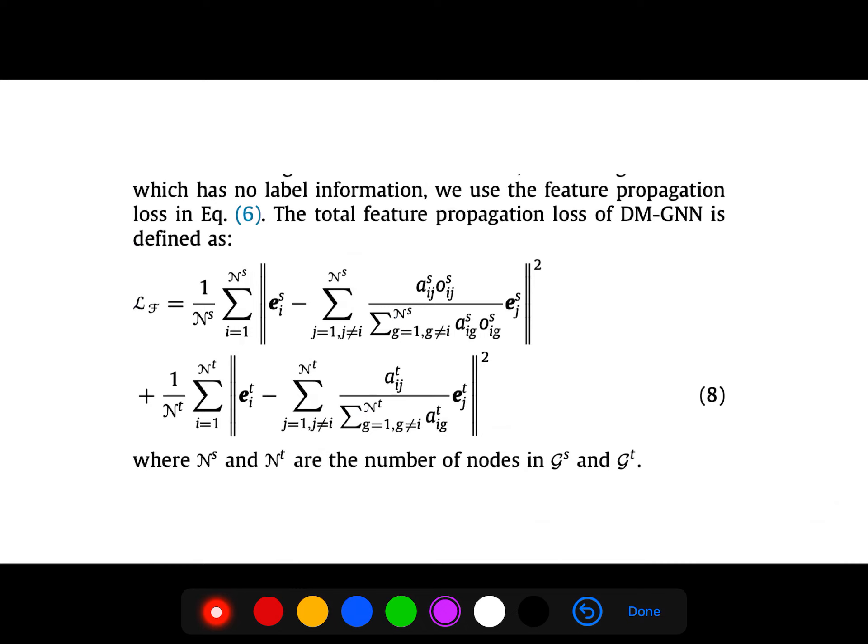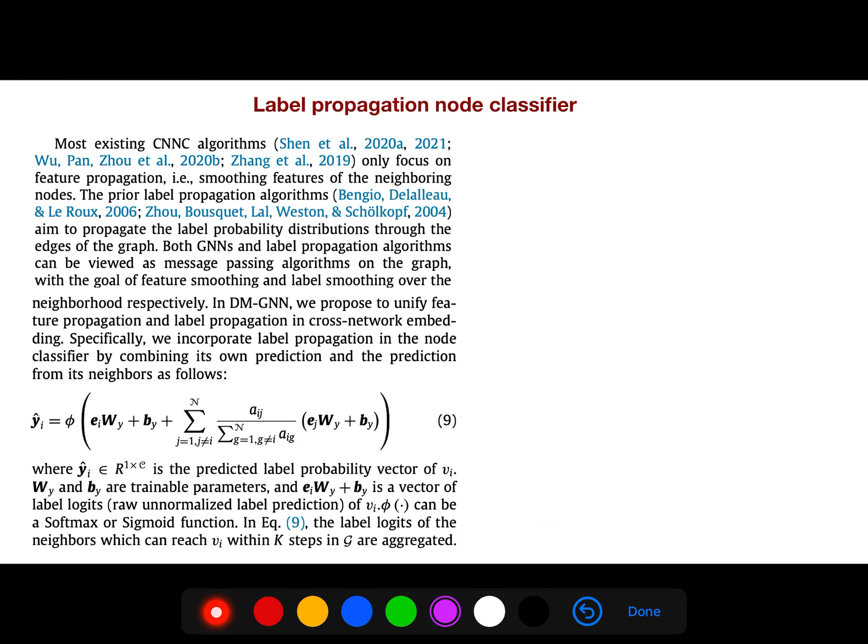So this paper is very complicated. I mean, they can formulate it easier, but I don't know why it looks very complicated. Most existing CNNC algorithms only focus on feature propagation, smoothing features of neighboring nodes. The prior label propagation algorithms aim to propagate the label probability distribution through the edges of the graph. Both graph neural networks and label propagation algorithms can be viewed as message passing algorithms in the graph, with the goal of feature smoothing and label smoothing over the neighborhood, respectively. During label aggregation, higher rates are assigned to more closely connected neighbors. This is a very interesting part of this paper.